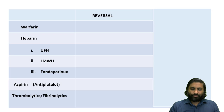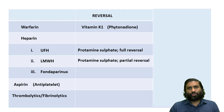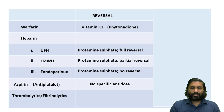Regarding reversal agents: the reversal agent for warfarin is vitamin K1 or phytonadione. The reversal agent for heparin is protamine sulfate — it completely reverses unfractionated heparin, partially reverses low molecular weight heparin, and has no activity against fondaparinux. Aspirin is an antiplatelet drug, not an anticoagulant, and has no specific reversal agent. Thrombolytic agents such as streptokinase and urokinase can be reversed by epsilon-aminocaproic acid and tranexamic acid.